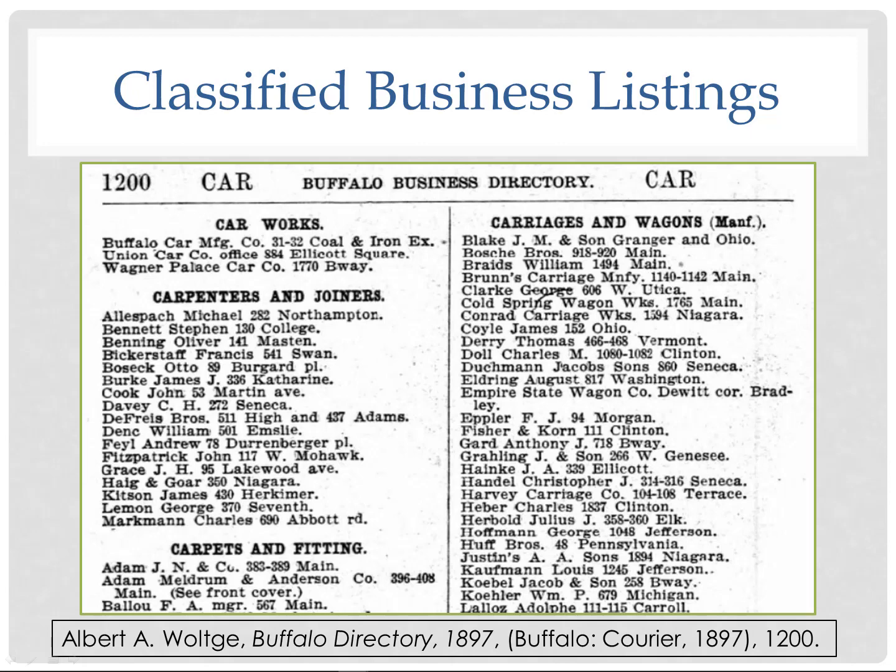Businesses may be listed alphabetically or in classified business listings. Here I've excerpted the Buffalo City Directory from 1897 with a sample of business classifications — carriage and wagon makers, car works (those cars refer to railroad cars, not automobiles, in 1897). You can look up whether your ancestor is listed, or possibly find your ancestor's employer listed there.